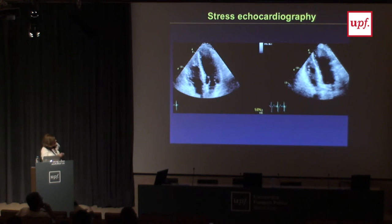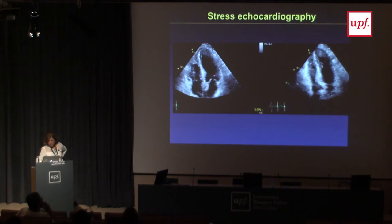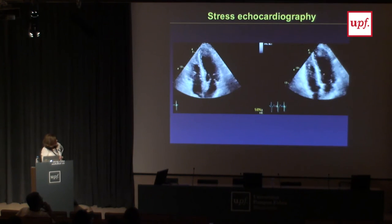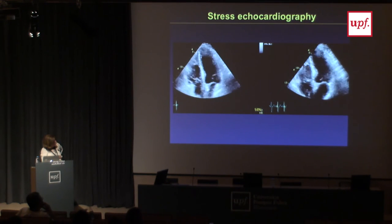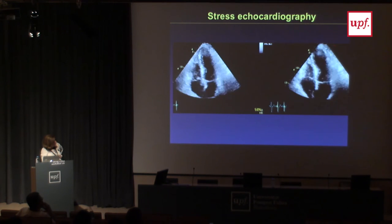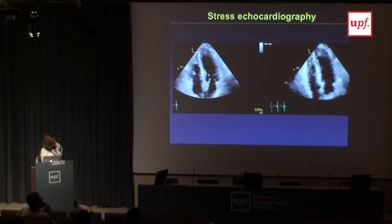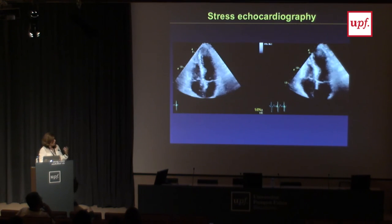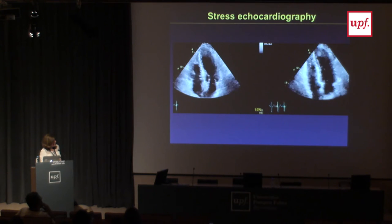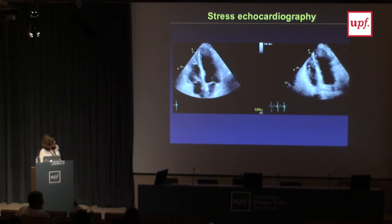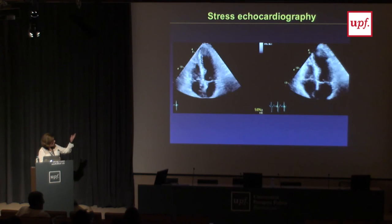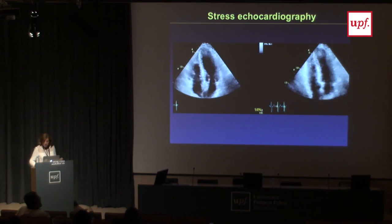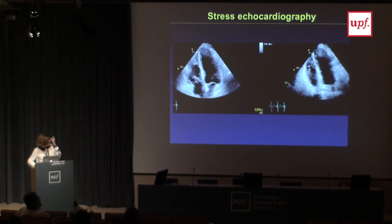In exercise echocardiography, images are acquired at rest and after exercise. Here the apex should close during exercise but persists open — akinetic. This patient started running on the treadmill and developed chest pain. The ECG showed important changes and we saw this abnormal segmental motion of the apex. We suspected significant coronary artery disease, which was confirmed on coronary angiography.